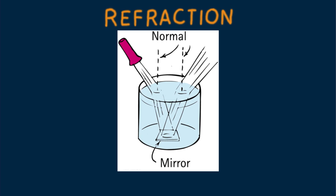Note that when it exits the water, light bends away from the normal. Does light change speed as it travels from air to water? The answer is yes, it slows. Does light change speed as it reflects from the mirror? The answer is no — reflection does not involve changes in speed. Does light speed up as it exits the water? I hope you said yes.